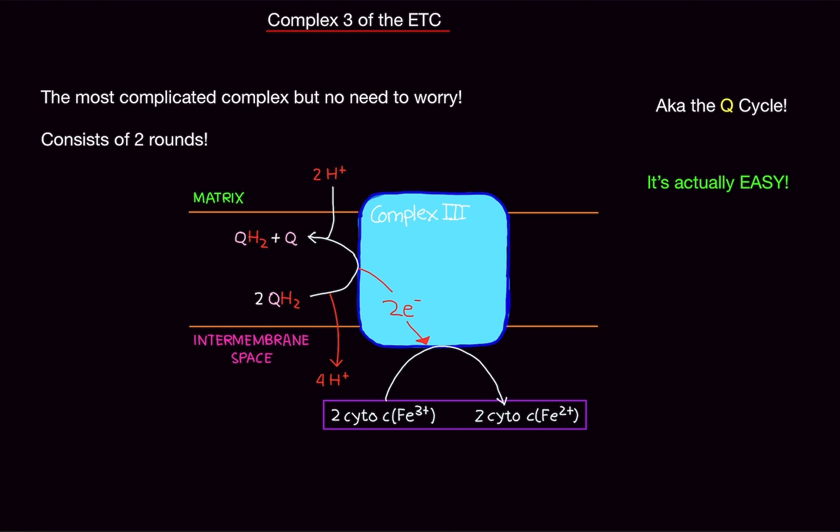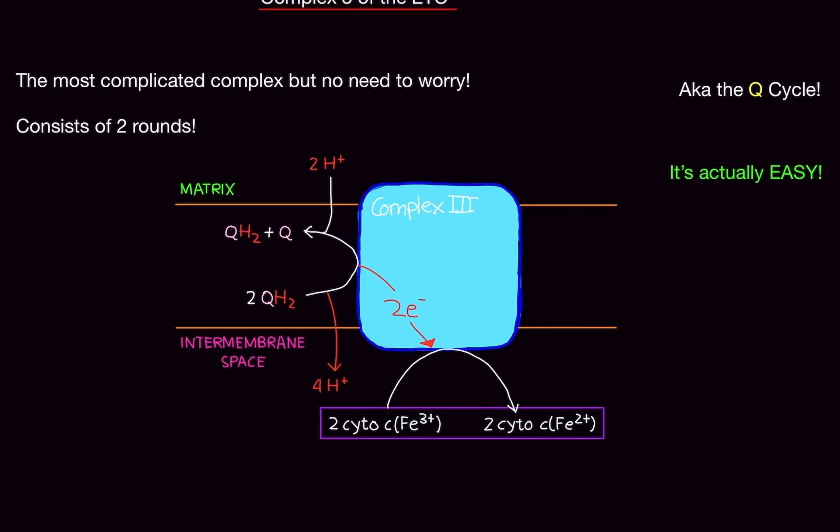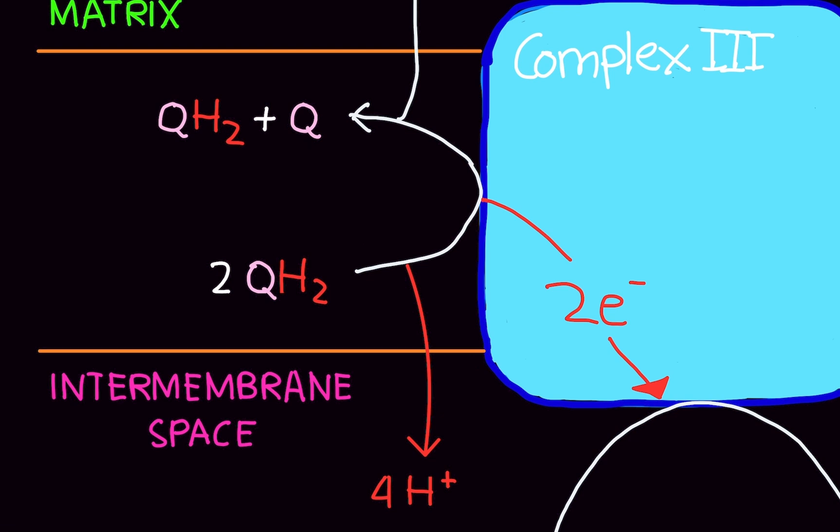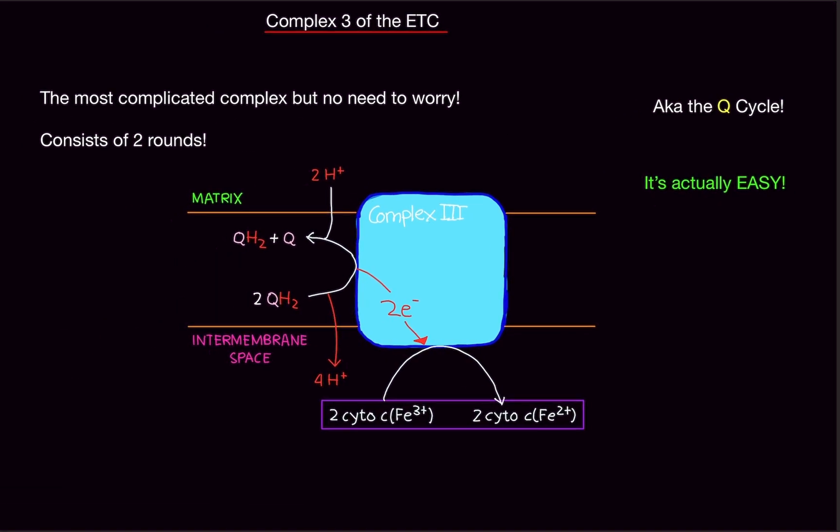Now, the big thing you also need to know is Complex 3 only functions with two ubiquinol molecules. If this was just one, this would not work. It would be impossible. And you would actually have severe, it would be problematic. So, you need two. That's really important. You're going to see why in a second.